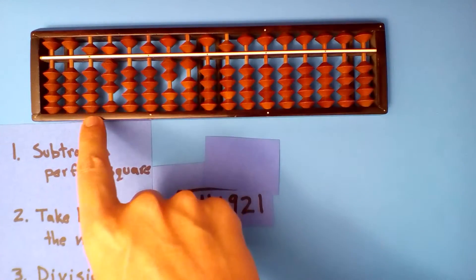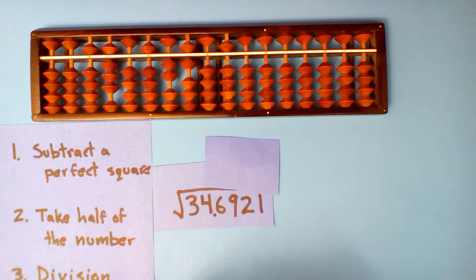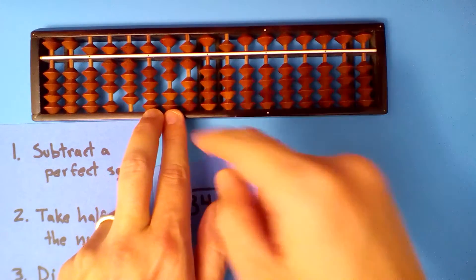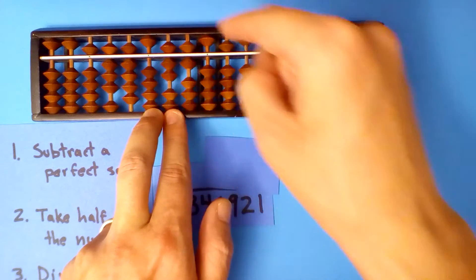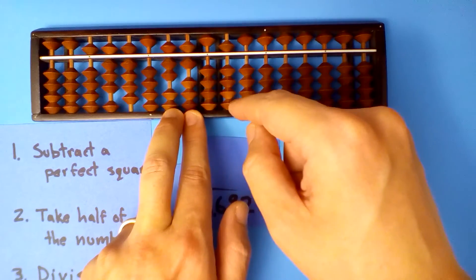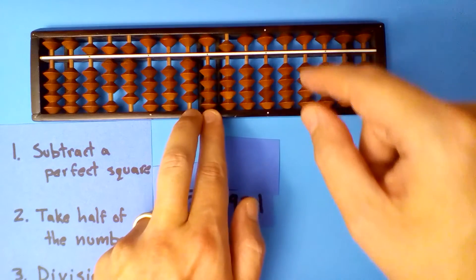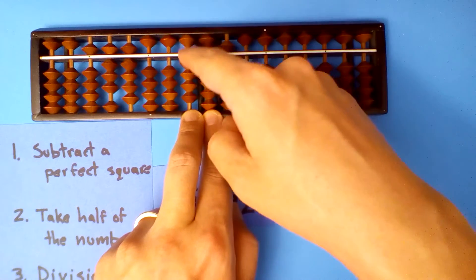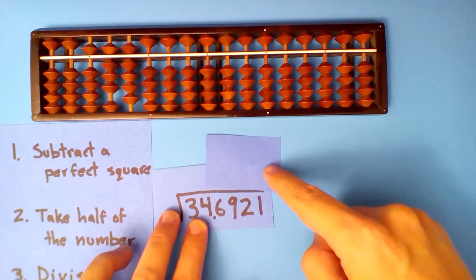How many times does 5.8 go into fifty-two? Nine times. Five point eight, seventy-two. Nine times itself is eighty-one — half of that is forty point five. And our root is 5.89.